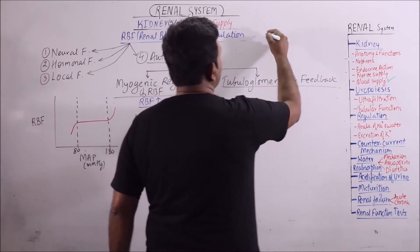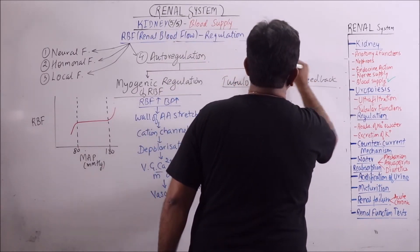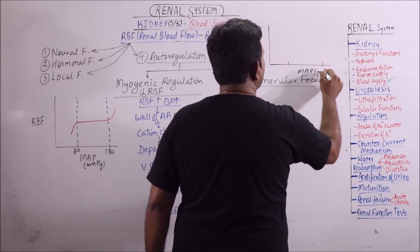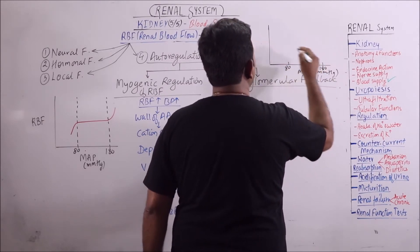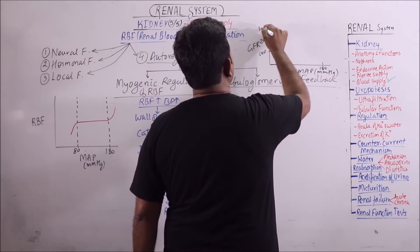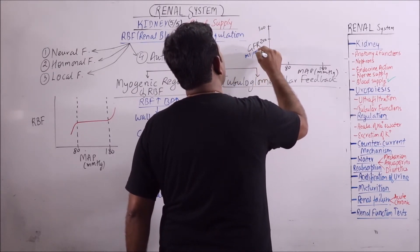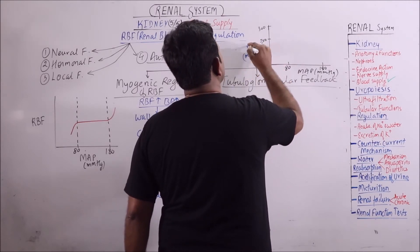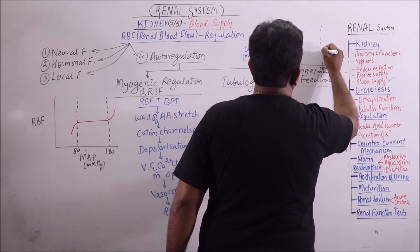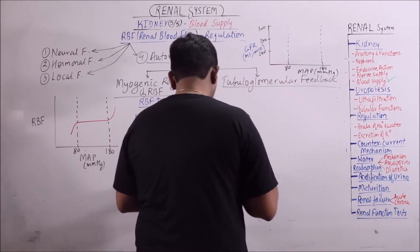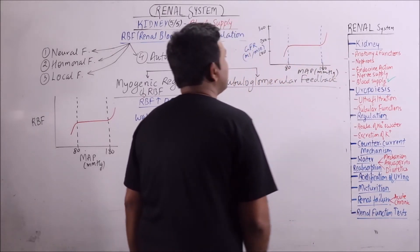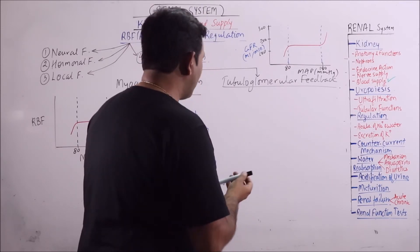Now there is another mechanism, that is tubuloglomerular feedback. How it works? It has been observed that again we are taking MAP, that is mean arterial pressure in millimeter mercury. This is 80, this is 180, and here it is GFR 100, 200, 300. This GFR is in ML per minute. Now it has been observed that with increase in mean arterial pressure, the GFR also increases, but it remains constant between 80 and 180 millimeter of mercury.